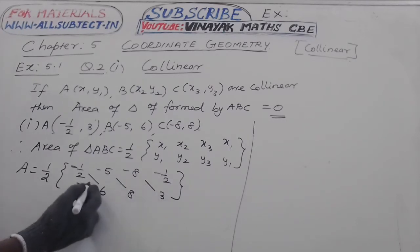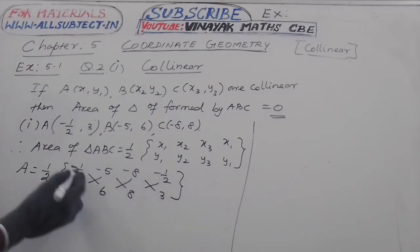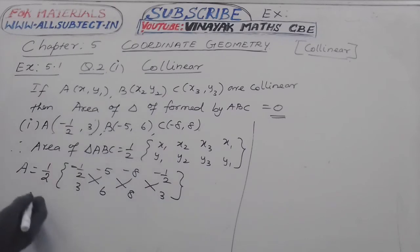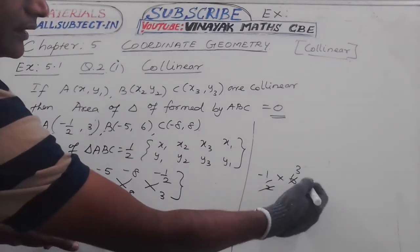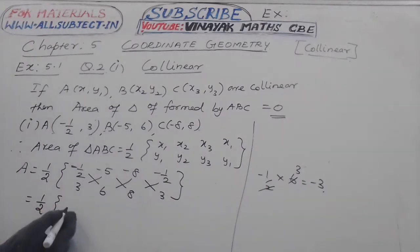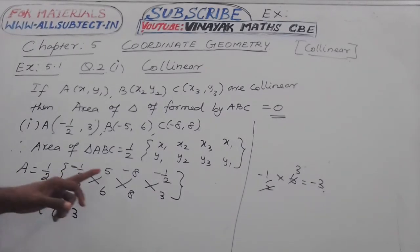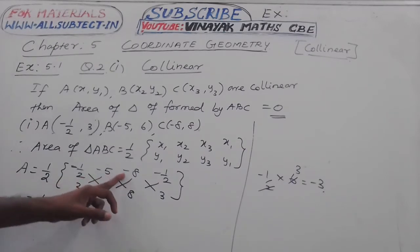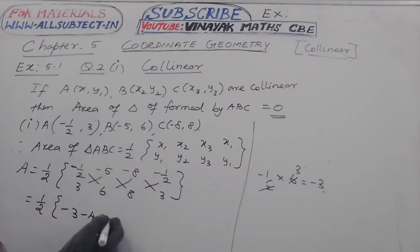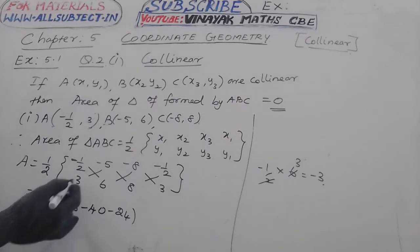Multiply then cross multiply, first upward to downward then downward to upward. This equals half. Now -1/2 into 6, that equals -3. Second, -5 into -8 equals -40. Next, -8 into 3 equals -24.